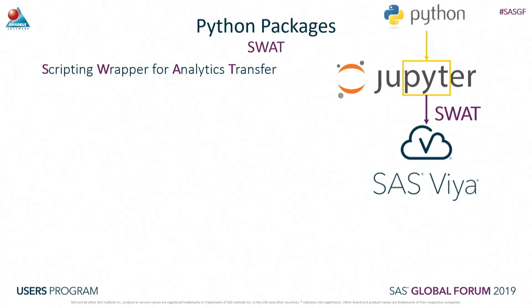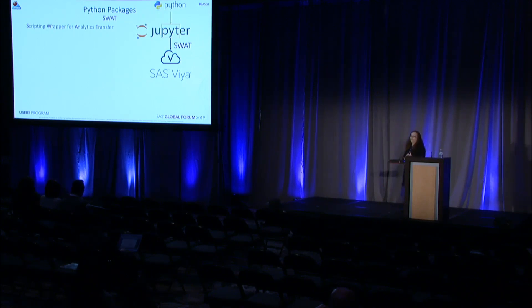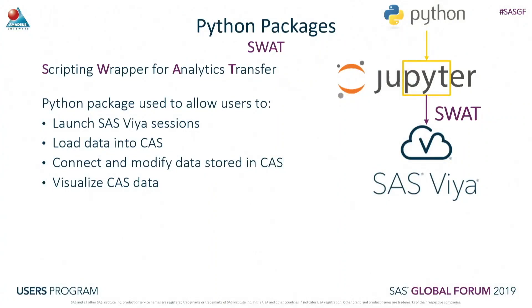So how do we connect to SAS Viya? Within Python, we need access to some additional packages, and the main package we need is something called SWOT - the Scripting Wrapper for Analytics Transfer. If we install this package, it gives us extra functionality to our Python session: we can launch SAS Viya sessions, load data into CAS, connect and modify data stored in CAS, and perform visualisations.